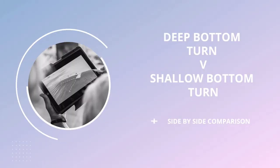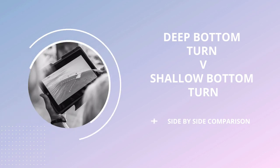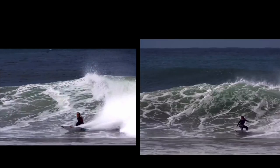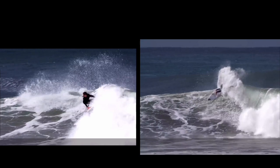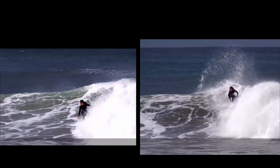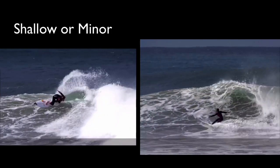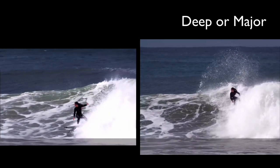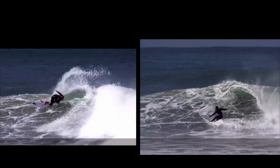Now we're going to have a little look at our deep bottom turn versus the shallow bottom turn using our surfer video analysis and we will do a full breakdown. Let's get started. We are going to use surfer Carolyn Marks on the WCT, who has got an insane backhand and an even better bottom turn. Left hand side is our minor or shallow bottom turn, right hand side is our major or deep bottom turn.